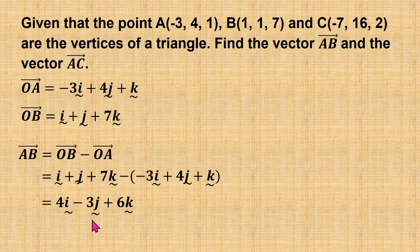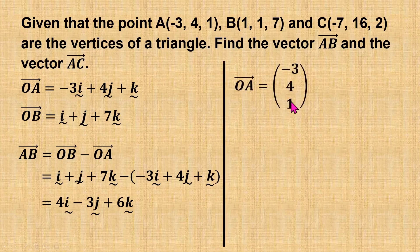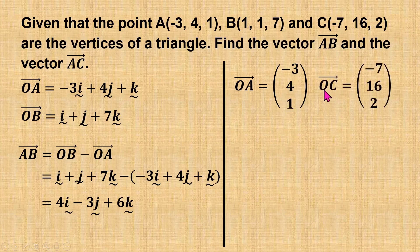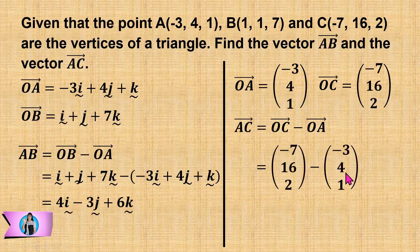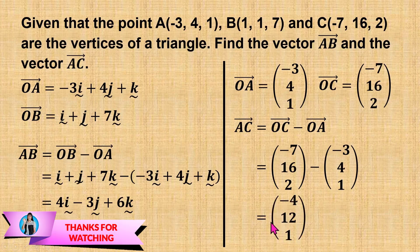Now, to find vector AC, I'm going to use the column vector form. From the coordinates of point A, the position vector of A in column vector form is written out, and the position vector of point C is also written as a column vector. Then vector AC equals position vector C minus position vector A. When I substitute the column vectors and simplify, this gives the vector AC in the form of a column vector.